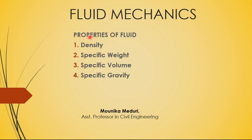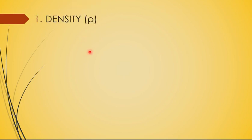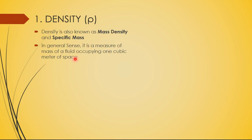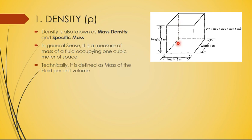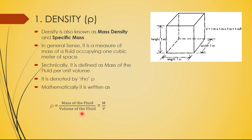In this video, let us see the properties of fluids: density, specific weight, specific volume, and specific gravity. The first one is density, which is actually mass divided by volume. It is also known as mass density or specific mass. In general, it is a measure of the mass of fluid occupying one cubic meter of space. Technically, it is the mass of fluid per unit volume, denoted by the Greek letter rho, and mathematically written as ρ = m/V.